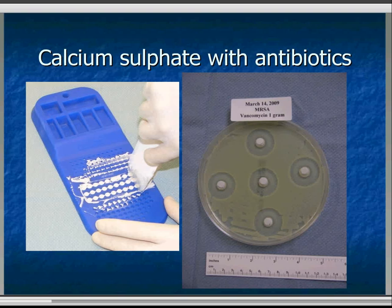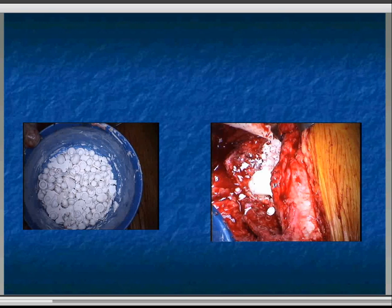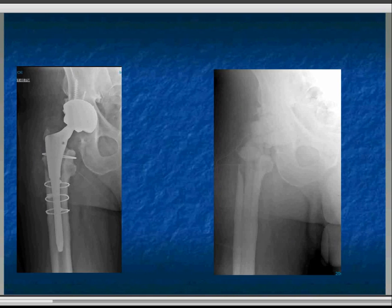This is the BioMet one, I think — there are a number of them around. Add the appropriate antibiotic. I would much prefer to make my own articulating spacer, adding the antibiotic that's appropriate for the organisms already grown. This of course presupposes that you know what the organism is.